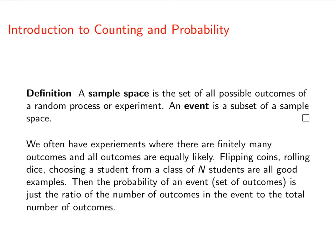The probability of an event, of a set of outcomes, is just the ratio of the number of outcomes in the event to the total number of possible outcomes.